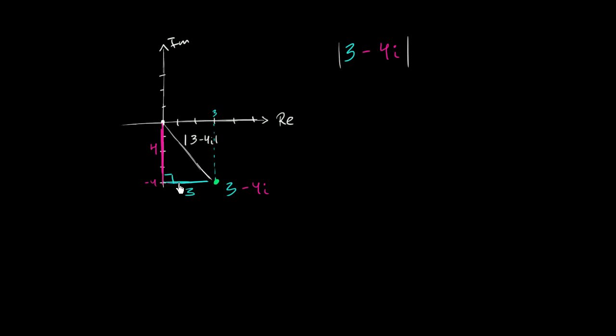This is definitely a right angle—this is a horizontal line and this is a vertical line. We can now use the Pythagorean theorem to figure out the absolute value of 3 minus 4i, the distance between this point and 0. It's the hypotenuse of this right triangle.